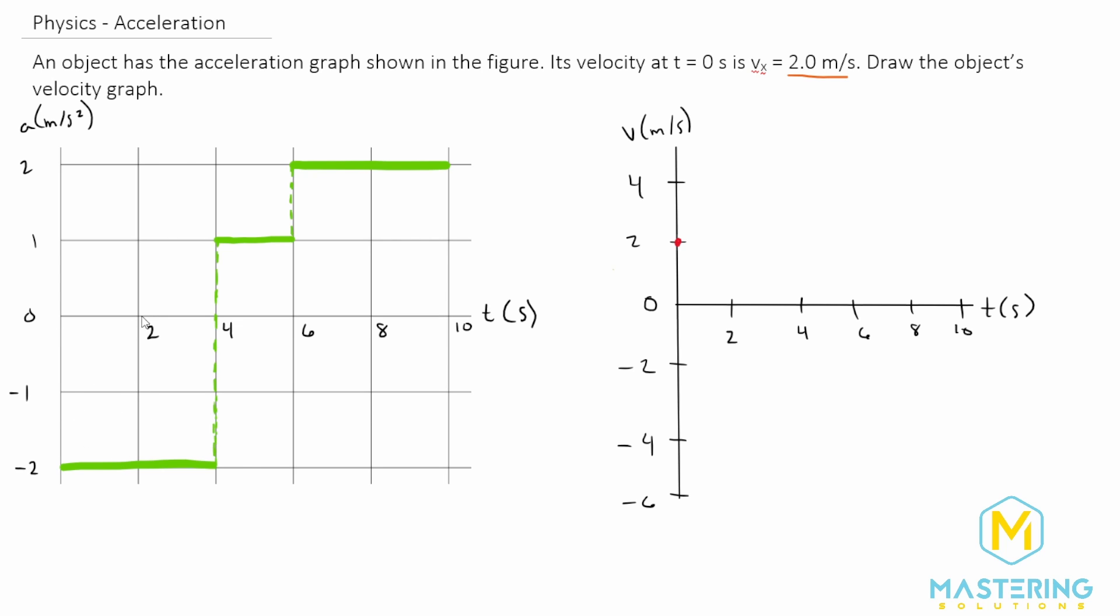So for time 0 to 2 seconds, the area is 2 by negative 2, so we change a negative 4 meters. So from 2 down to negative 2 at 2 seconds.